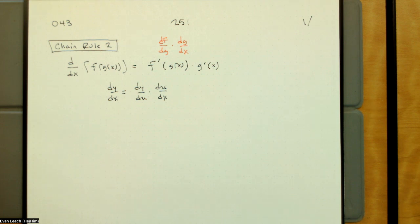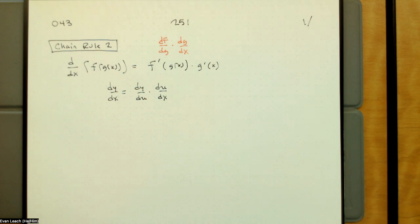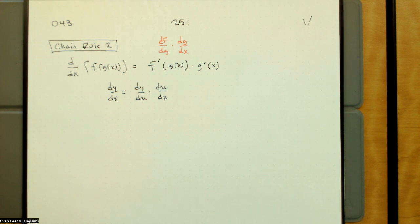We mentioned that the chain rule is something that is always in effect. It's just that sometimes the derivative of the inside is just one — sometimes we have to multiply by the derivative of x with respect to x, which is one, so we don't bother mentioning it. But we should always remember that the chain rule is always in effect.